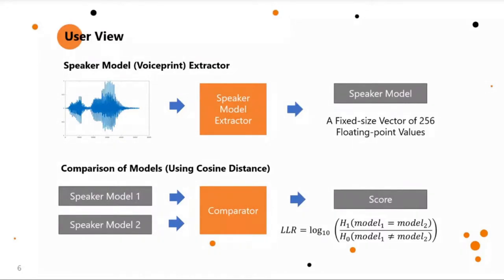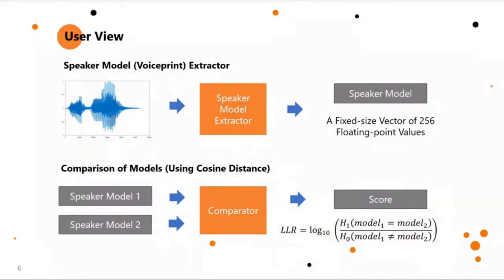There are two modules. One module is the voice print extractor. We take a speaker recording and convert it to a single record — a large floating-point vector of 256 values — which is our biometric identifier for the user. Then we have a comparator module. We can take two speaker models or voice prints, send them to this comparator, and it will tell us how far apart these speaker models are from each other.